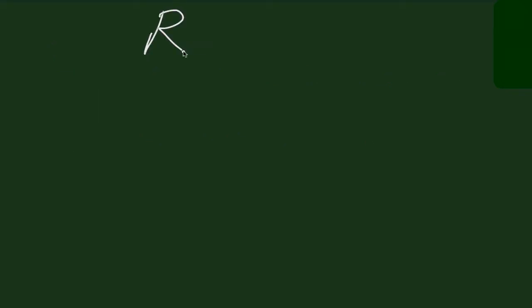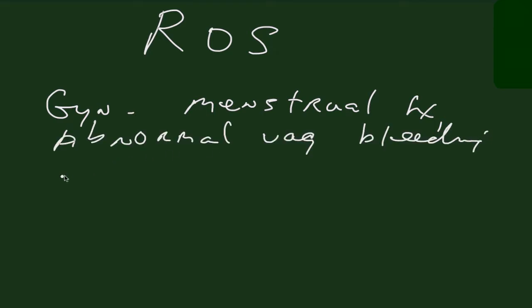A review of systems related to the various pelvic organ systems may lead you to the reason for this woman's pain. We need to know her menstrual history and her last menstrual period. Is there associated abnormal vaginal bleeding? Does she have a vaginal discharge? Is there pain with intercourse or her menstrual period?